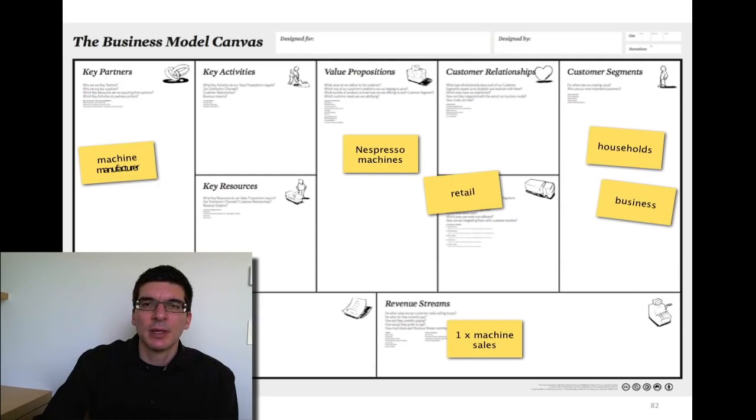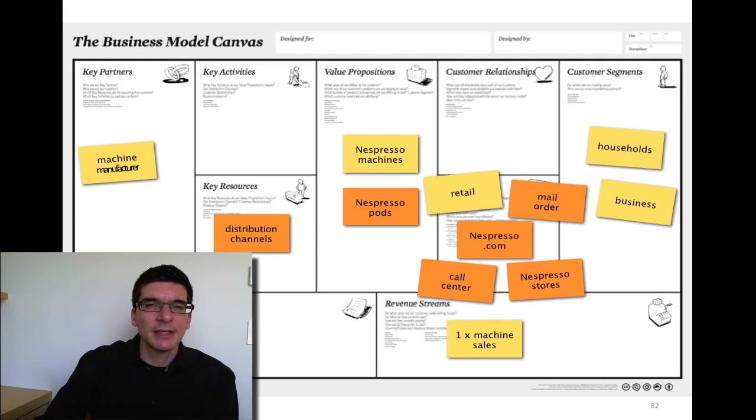Now here's where it gets interesting. For the Nespresso pods with the coffee inside that you put in the machine, they didn't use retail. They only sell through their own channels. First, mail order, call center, then obviously Nespresso.com. And then afterwards they built Nespresso stores. Which means they had to build as a key resource all their own channels. This is curious. Why did they make a difference between the machines and the pods? Well, because they understood the dynamics of the strategy there.